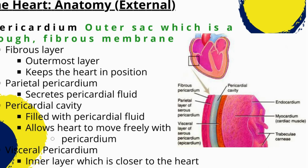The serous pericardium is the inner layer of the pericardium, composed of a thin, slippery membrane that surrounds the heart. This layer is divided into two parts: the parietal layer, which is in contact with the fibrous pericardium, and the visceral layer, which is in direct contact with the heart. The space between the two layers is known as the pericardial cavity, containing a small amount of fluid that lubricates the heart and reduces friction. Overall, the pericardium protects the heart from physical damage, keeps it in place, reduces friction, regulates pressure within the heart, and prevents fluid accumulation around it.